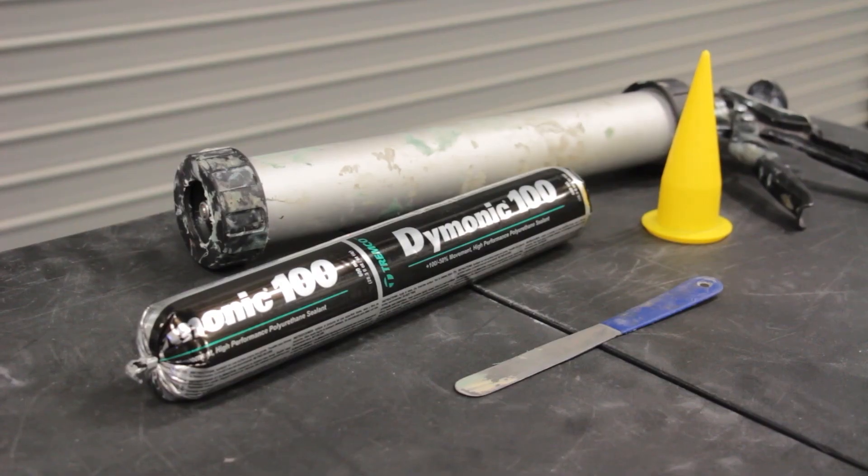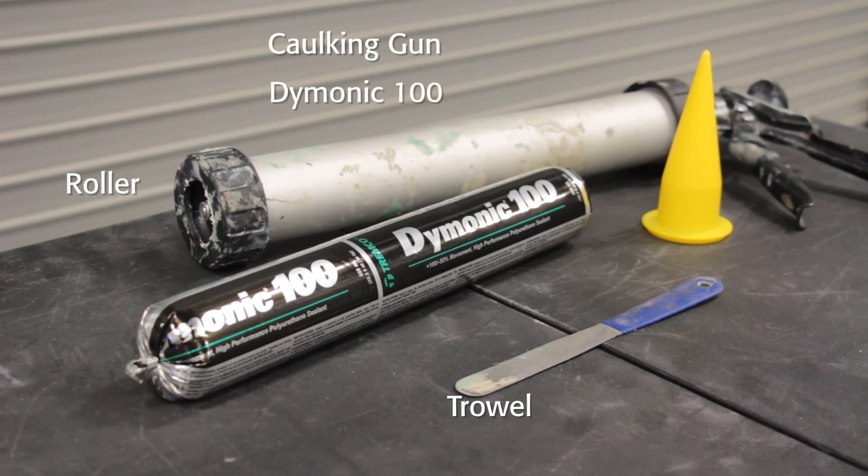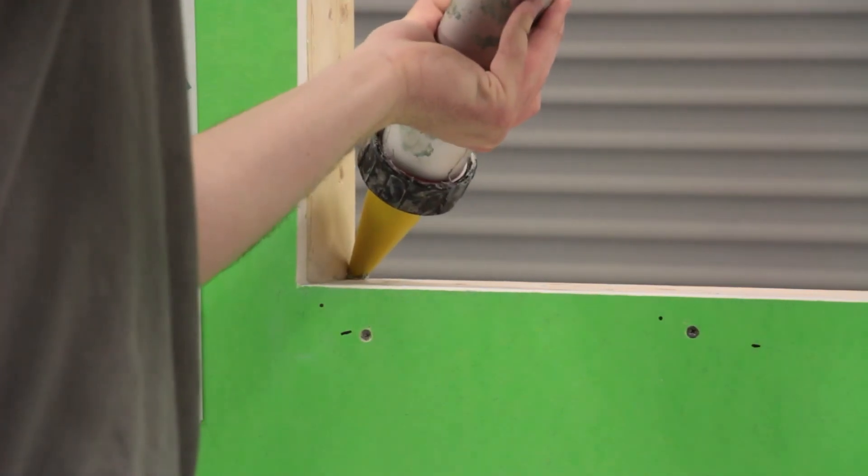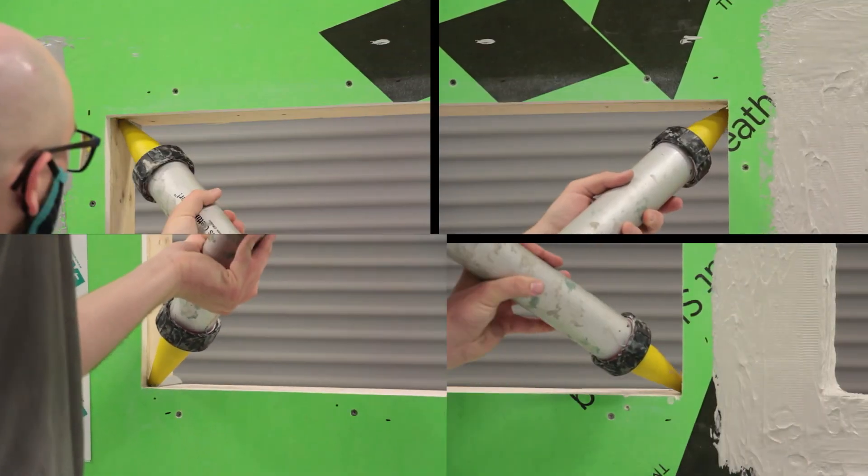To flash the rough opening with Dymonic 100, you will need a caulking gun, Dymonic 100 trowelable urethane sealant, and a trowel. First, apply the sealant in all four corners.